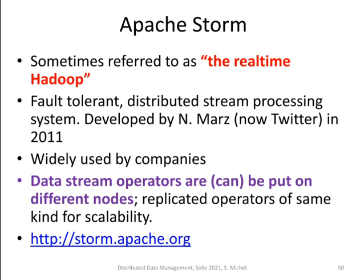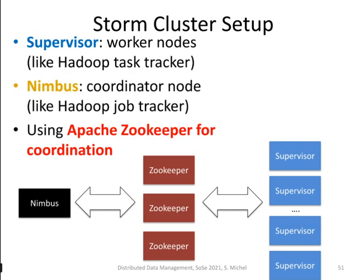Data operators in Storm can be placed on different machines in a network, making it a true scale-out architecture. A typical Storm cluster has supervisor nodes (worker nodes) and the Nimbus, which is the coordinator node similar to the job tracker in Hadoop. Apache ZooKeeper handles coordination between the Nimbus and the supervisor nodes.